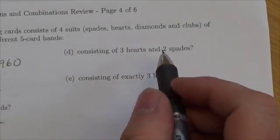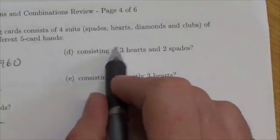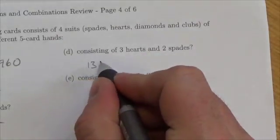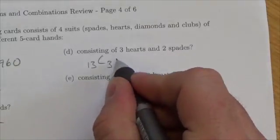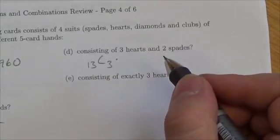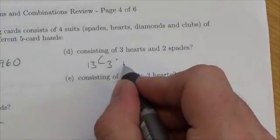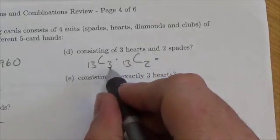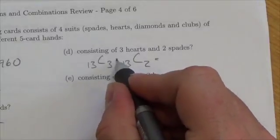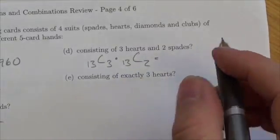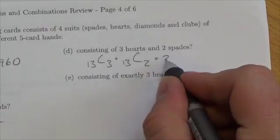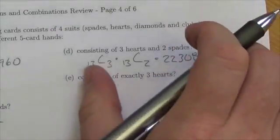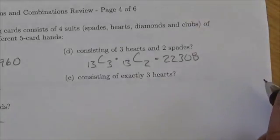This next restriction says, what if it consists of three hearts and two spades? So I have to choose hearts—13 choose 3 of those hearts—and then I've got to choose spades. There are 13 spades, and I want two of them. So 13 choose 3 for the hearts and 13 choose 2 for the spades. It turns out there's much more here—there's 22,308. So all of a sudden, there's a lot more of these than there are of the last couple that we've been looking at.